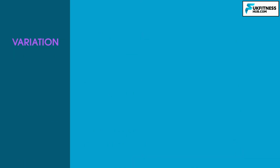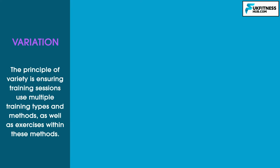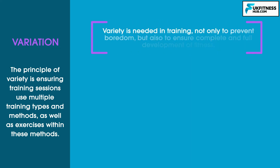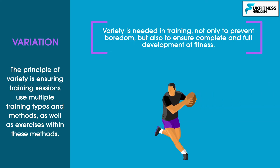Finally, we have variation. The principle of variety is ensuring training sessions use multiple training types and methods, as well as exercises within these methods. Variety is needed not only to prevent boredom, but also to ensure complete and full development of fitness. For example, a rugby league player would use various training types throughout the week — such as aerobic, strength, flexibility, and anaerobic training — all of which are needed to play the sport as well as possible. Within these sessions, anaerobic training would not only consist of short interval training, but could also include resistance training or plyometrics.